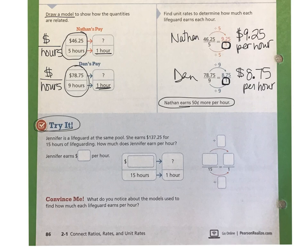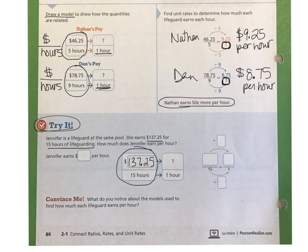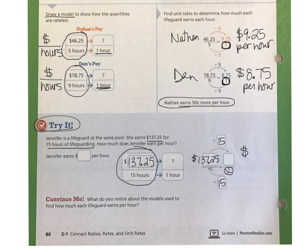Now let's take that strategy and apply it to a new question. Look at the Try It at the bottom of your page. Jennifer is a lifeguard at the same pool. She earns $137.25 for 15 hours of lifeguarding. How much does Jennifer earn per hour? We're going to take her paycheck of $137.25 and divide by 15, because we want to know how much she earns for just one hour of work. Pause the video while you calculate her hourly pay, then unpause to check your answer.